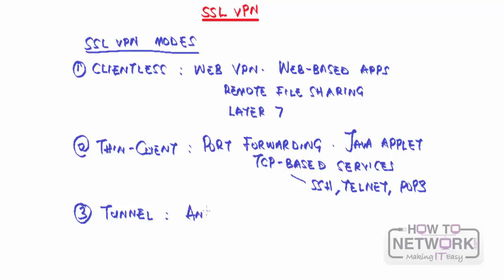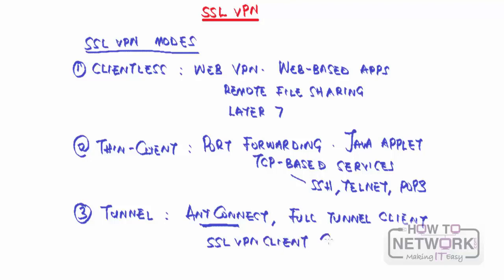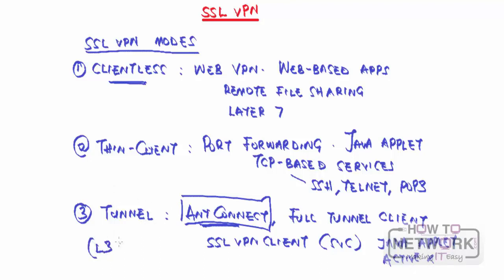The third and most robust mode is Tunnel Mode, known by different names including AnyConnect - the name Cisco currently uses - and also called Full Client or Full Tunnel Client mode. A tunnel client, currently the Cisco AnyConnect client (previously called the SSL VPN Client or SVC), is dynamically downloadable and does not have to be pre-installed. Users log in via clientless mode, download the AnyConnect client delivered via Java applet or ActiveX, and tunnel mode gives you Layer 3 network layer access, working just like IPSec remote access VPN.